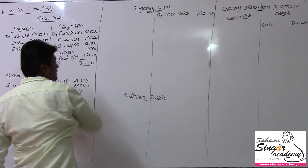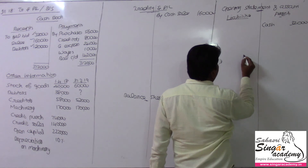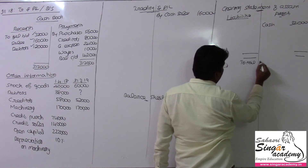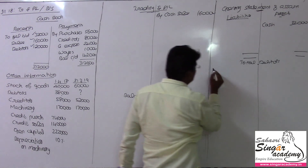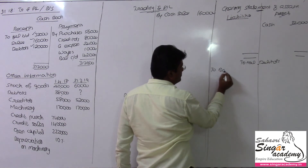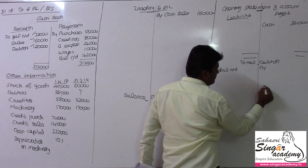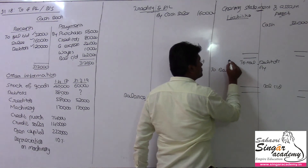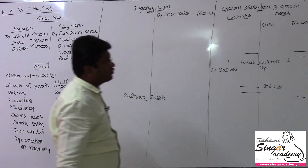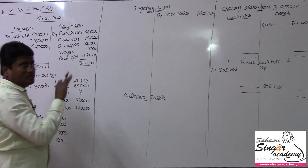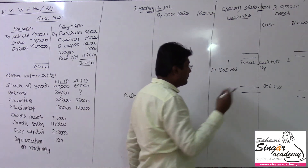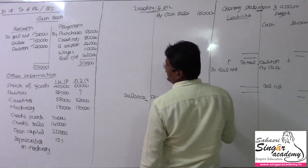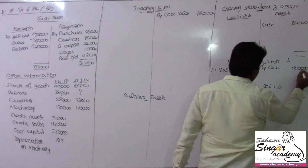For debtors, we need to open the Total Debtors Account. The debtors account shows the opening balance brought down and the closing balance carried down. Cash received from debtors — value being 1 lakh 20,000 rupees — is a single entry record posted to the cash book.